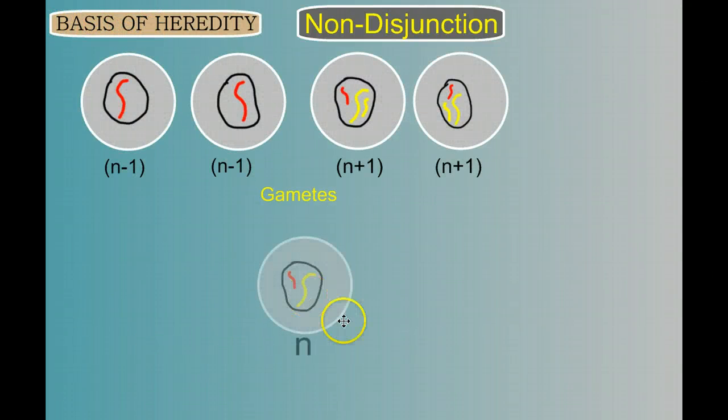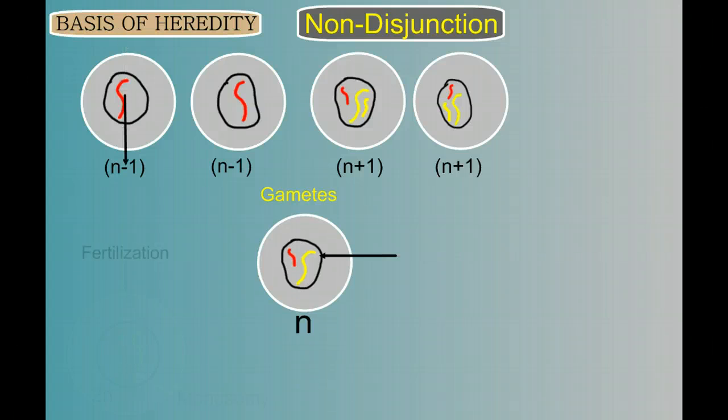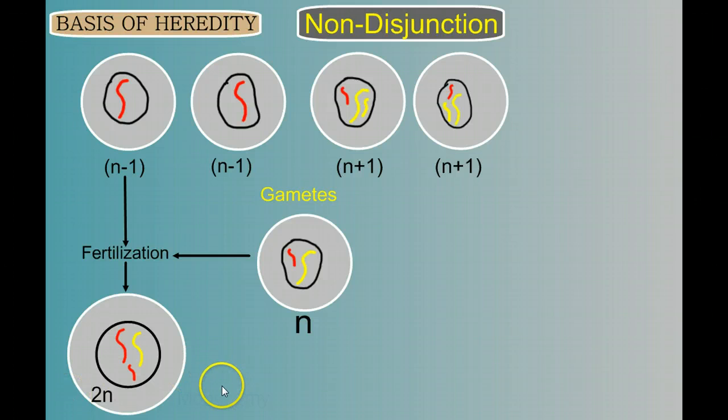A normal gamete should be haploid, having one long chromosome and one short for our example. Now, what if one of these N minus one gametes was fertilized by a normal gamete? The fertilization event would result in a zygote that's diploid, except that it's missing a chromosome. For this chromosome, it's monosome.